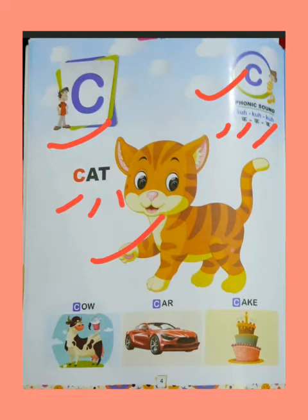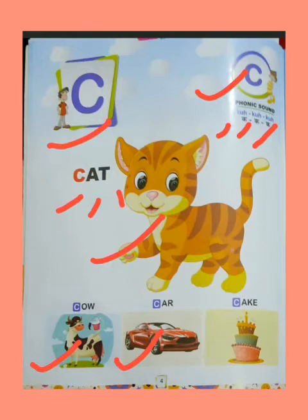Next. C. C for cow. Cow means gaay. C for car. Car means gaadi. Okay kids, gaadi aapne dekhi hai na, jo four wheels ki hoti hai. This is cow. C for cake. Cake means cake. Aapne dekha hoga ki aapki birthday par jo cake aata hai, yeh wahi cake hai. Toh C for cake.